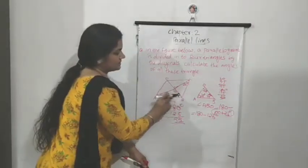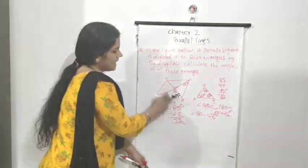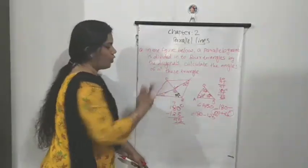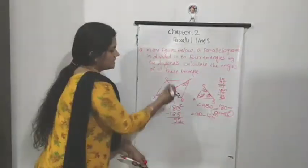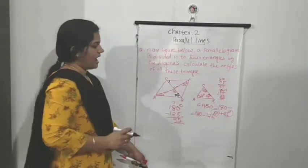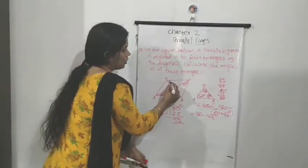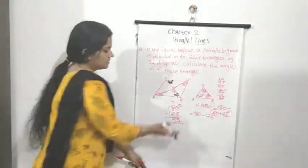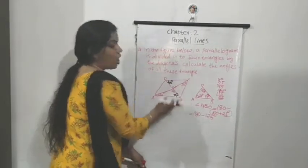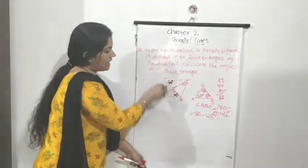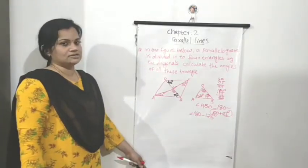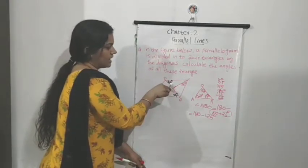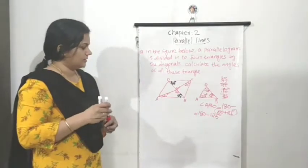Now, line DB intersects and we find that this angle is 55 degrees. The alternate angle of angle ABO is angle ODC. These are alternate angles, so angle ODC is also 55 degrees. We already studied the alternate angle theorem. So we have found these two angles, both 55 degrees.